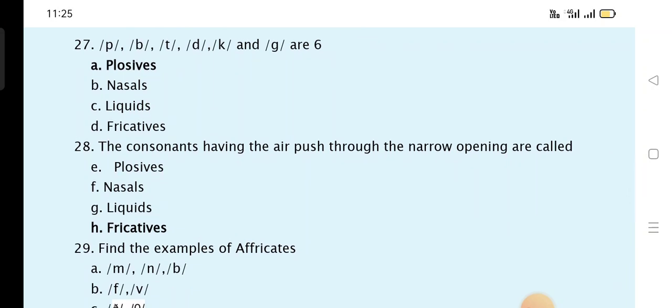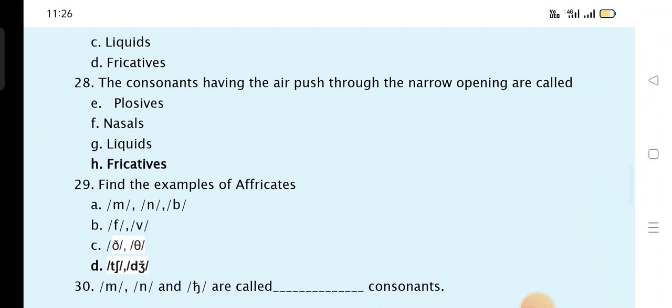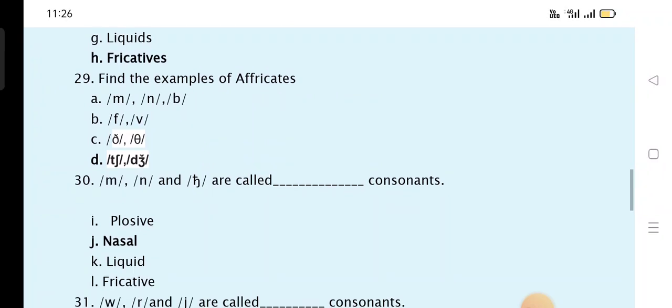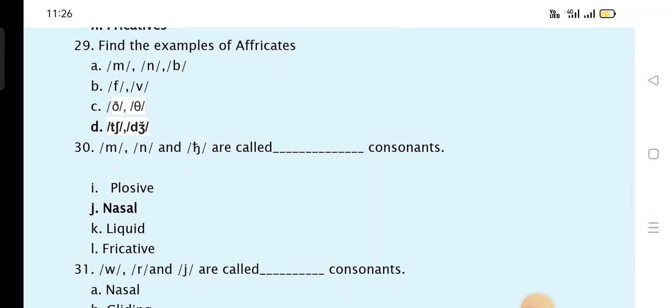The consonants having air pushed through the narrow opening are called fricatives. Find the example of affricates. Affricates are CH and J.